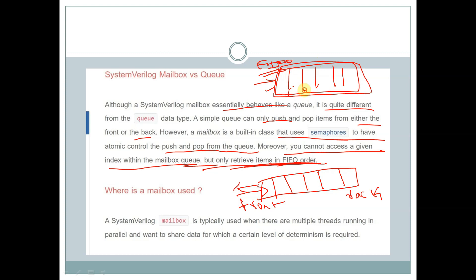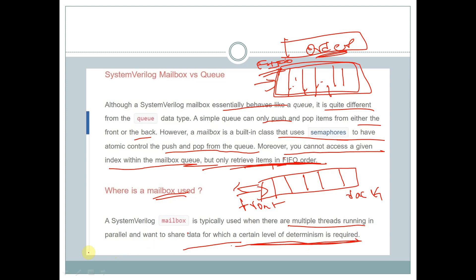Usage of mailbox: a SystemVerilog mailbox is typically used when there are multiple threads running in parallel and want to share data for which a certain level of determinism is required. If in a testbench multiple components are working in parallel, then we need a mailbox.